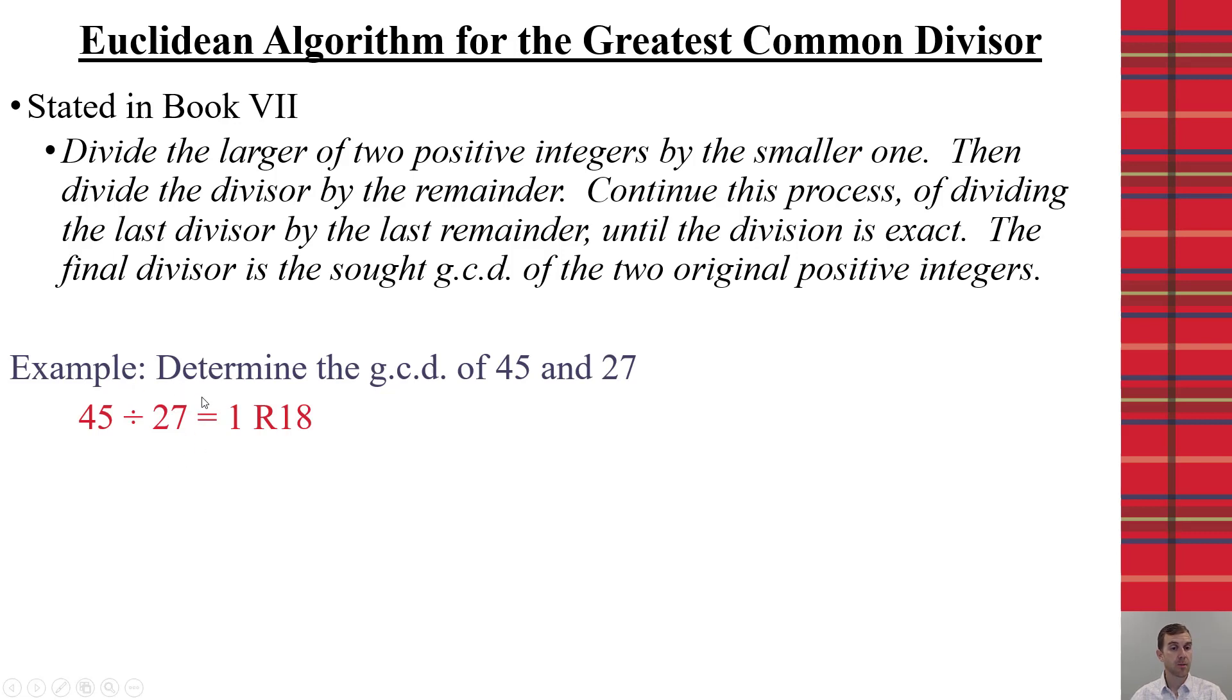That means I need to take my divisor and divide by my remainder. 27 divided by 18, again, it's not even, so it's 1 with a remainder of 9. So, I take my new divisor, 18, divide by my new remainder of 9. That does divide evenly, so that last divisor, 9, represents my GCD for 45 and 27.